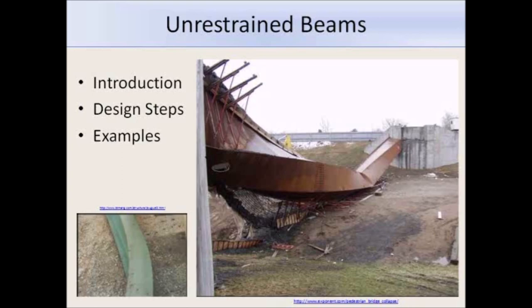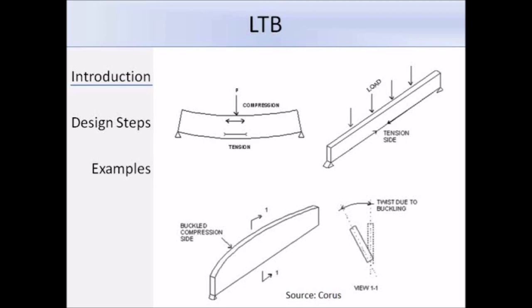Let's begin with the definition of LTB. When a load is applied to a beam, the top of the beam will be in compression and the bottom will be in tension, as illustrated by the top two diagrams. The tension force stretches the bottom of the beam and keeps it straight between the supports. On the top flange, the compression force can cause the top flange to buckle. Since the bottom of the flange is effectively restrained by the tension force, the beam can only buckle sideways and twist as shown in the bottom two diagrams.